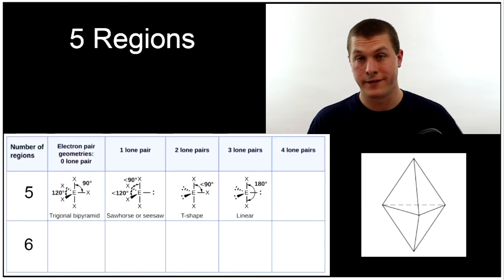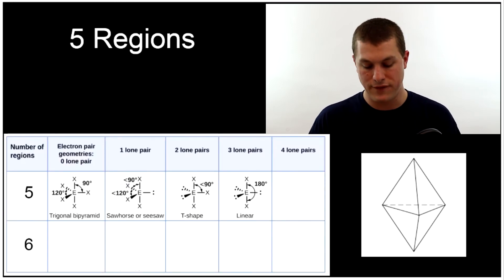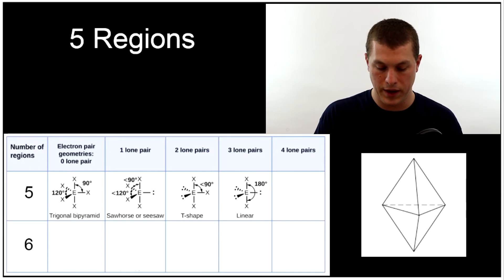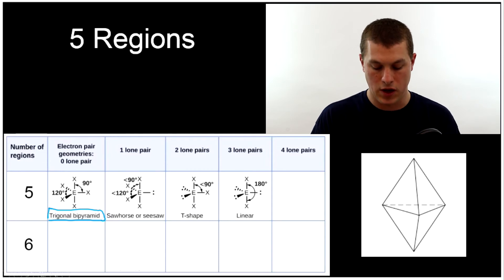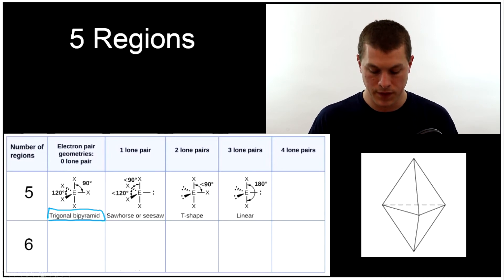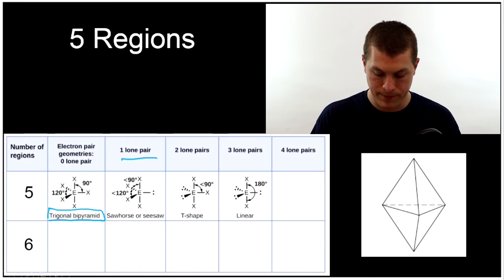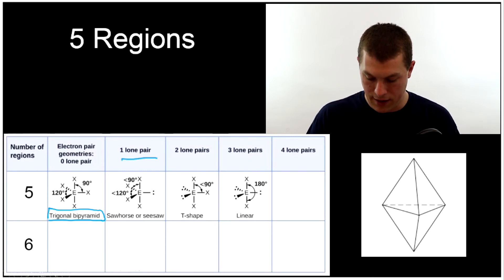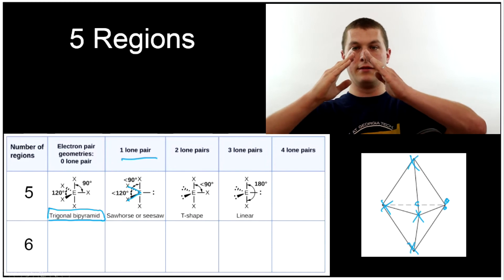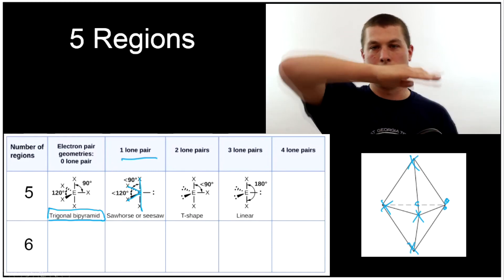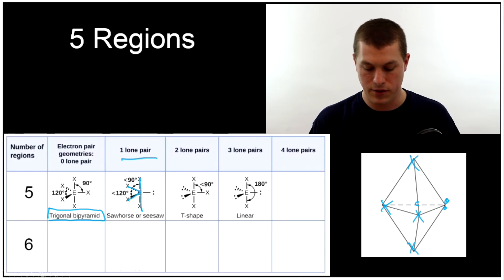Now let's look at five regions of electron density. With zero lone pairs we get trigonal bipyramidal — same name as the electron geometry because all spots have bonds. If we add one lone pair, we get a fun shape: with atoms here, here, here, and here around a central atom, plus one lone pair, it looks like a sawhorse or seesaw. Think of the centerpiece of a teeter-totter going back and forth — so we call it a seesaw or sawhorse.